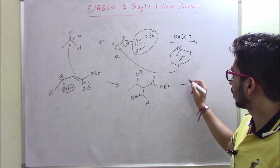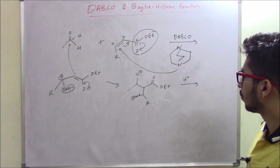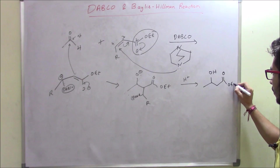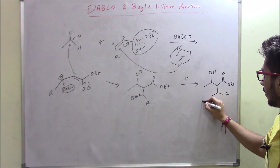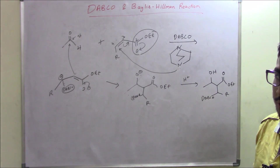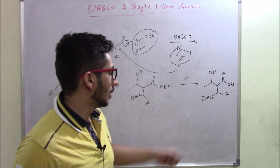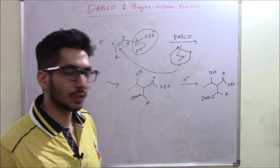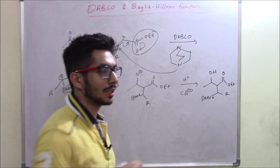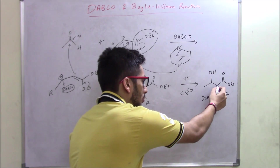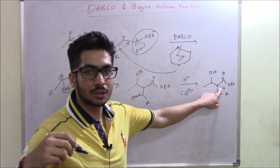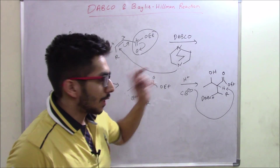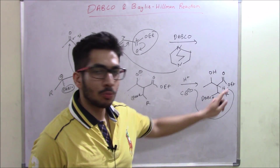Next we perform an acid workup, adding some acid that converts the O minus into an OH group. When we add the acid, the O minus gets protonated. Once the H plus is taken from the acid, a conjugate base is generated. This conjugate base abstracts the most acidic hydrogen in the molecule, which is the hydrogen on the carbon bearing DABCO — it's a very acidic hydrogen.